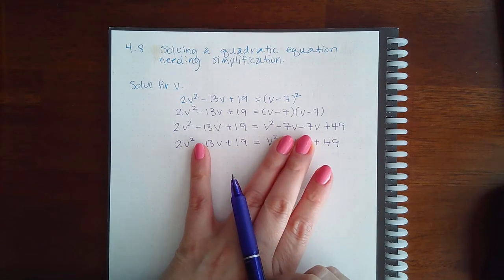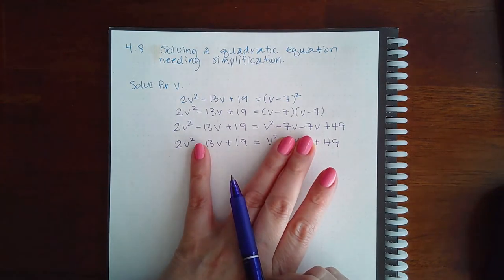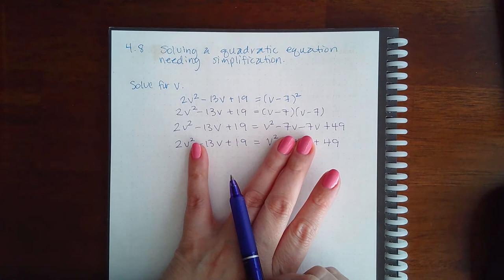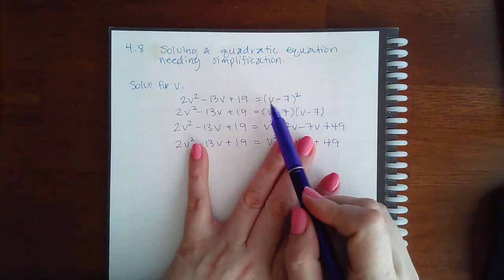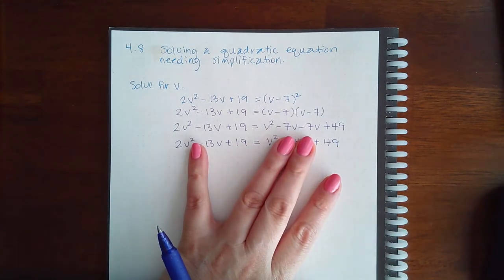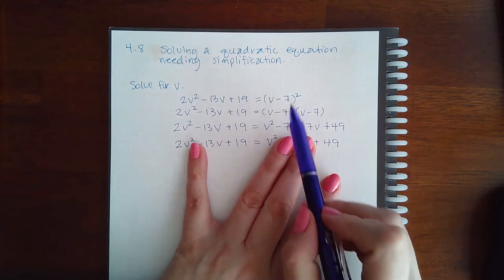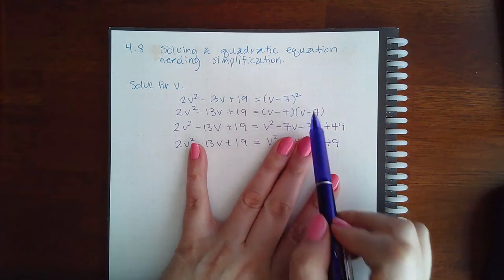Or they may have done -7 times -7 and got +49. Either way, you cannot just square terms like that individually. You have to remember what a square means: it means that entire thing times itself.